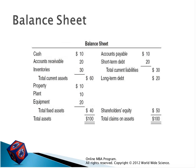Another balance sheet example — also horizontal format. On the left-hand side, assets: cash, accounts receivable, inventories, and long-term assets like property, plant and equipment. We calculate total assets. On the right-hand side, liabilities: short-term accounts payable, short-term debts, and long-term debts. We also see shareholders' equity. Both sides equal 100 — the left side equals the right side — assets equal liabilities plus shareholders' equity.